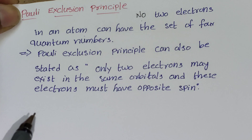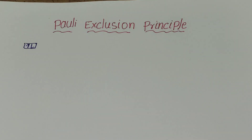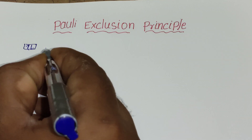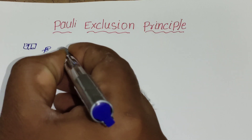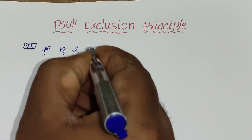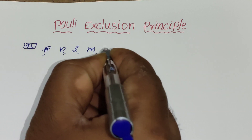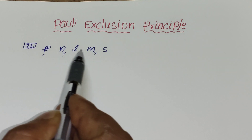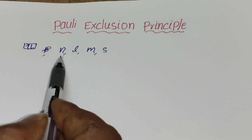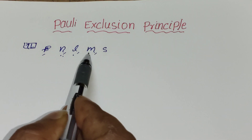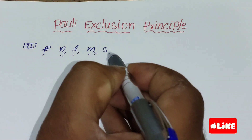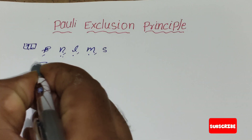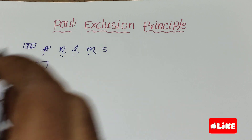According to Pauli's Exclusion Principle, no two electrons can have the same four quantum numbers — that is, the principal quantum number, angular momentum quantum number, magnetic quantum number, and spin quantum number. If two electrons share the same principal, angular momentum, and magnetic quantum numbers, then the spin quantum number (ms) must be different, because the maximum capacity of an orbital is two electrons.